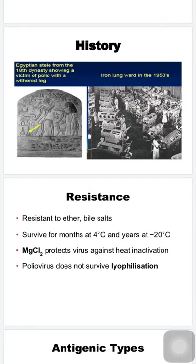In the 1950s there was a polio epidemic and a special ward known as the iron lung ward was created, where mechanical ventilation was provided to polio patients due to difficulty in breathing caused by involvement of nerves innervating the diaphragm. Looking at resistance, poliovirus is very resistant to acids and bile salts.